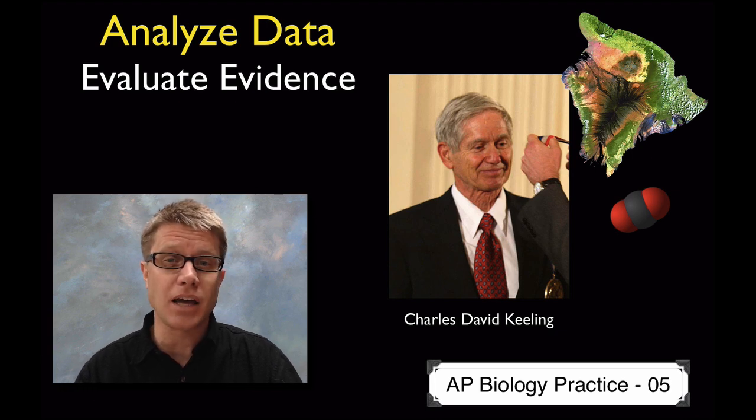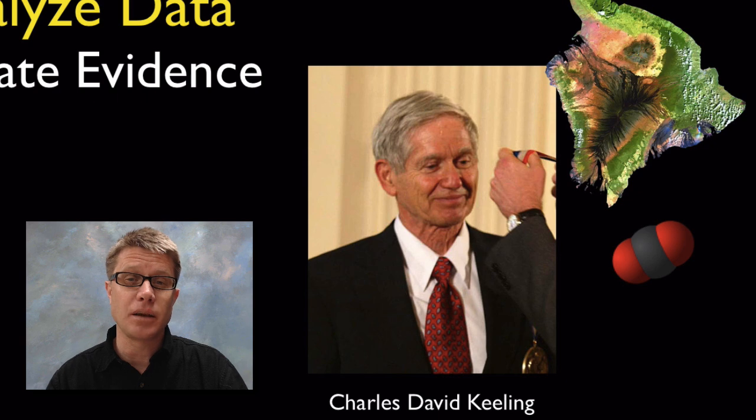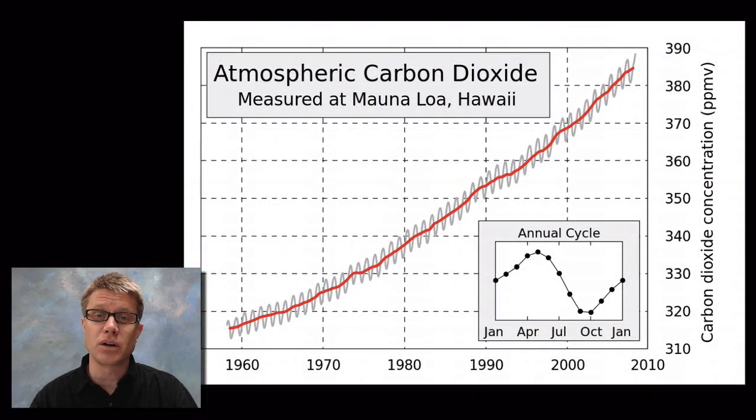One person who collected a lot of data during his lifetime was Charles David Keeling. He was collecting data on the amount of atmospheric carbon dioxide at Mauna Loa on Hawaii. This is just a sampling of some of his data. When you look at it, the first thing you might realize is wow, this is overwhelming. This is just data from one year. So I can't tell anything from that. The first thing you want to do is organize the data. A graph is a great way to do that.